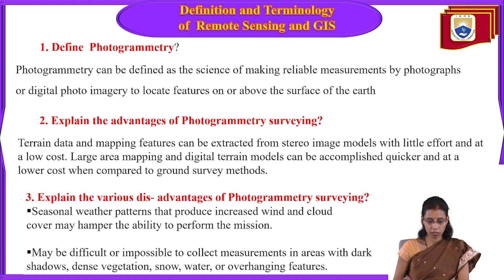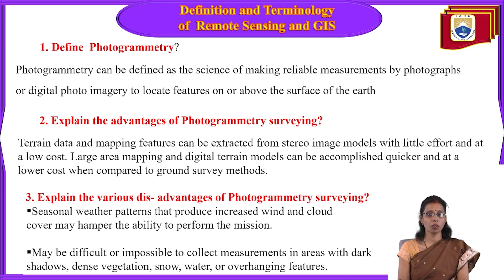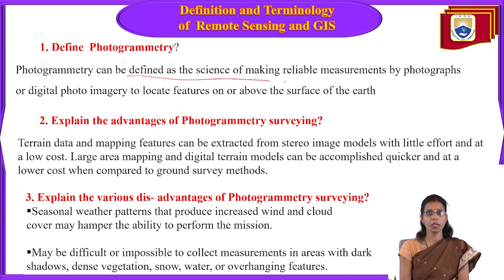Let us start with the first topic: define photogrammetry. This is from the first unit. Photogrammetry is the art, science, and technology of obtaining geographical, land, and spatial information. It can be defined as the science of making reliable measurements from photographs to locate features on or above the surface of the world.